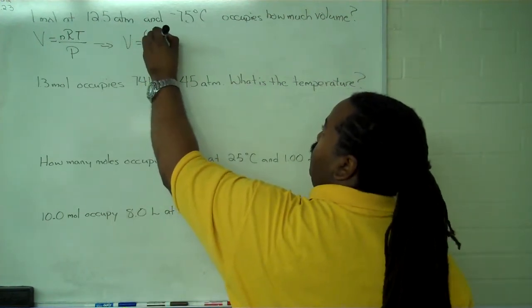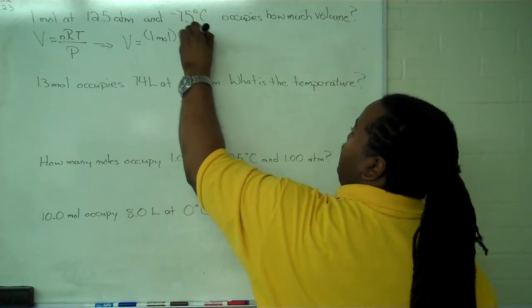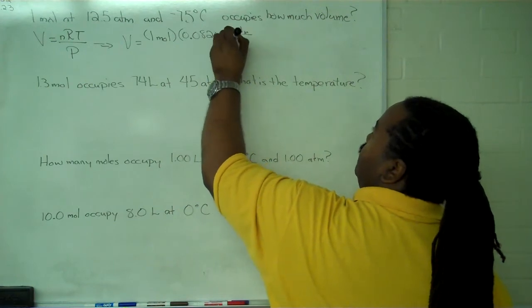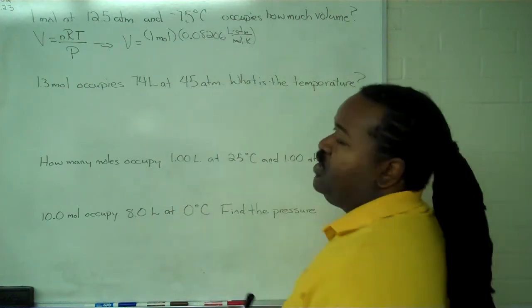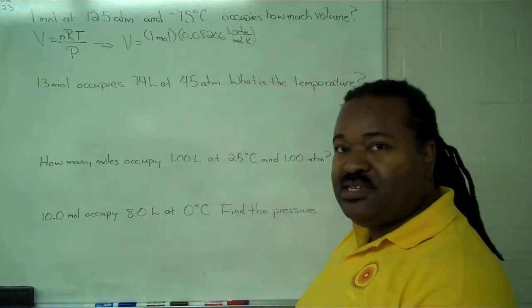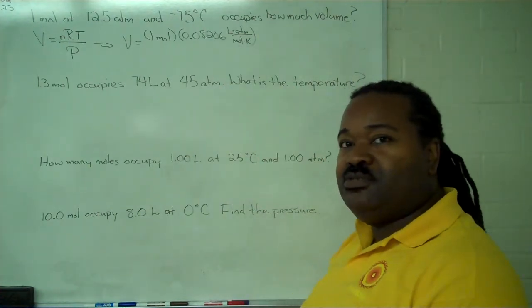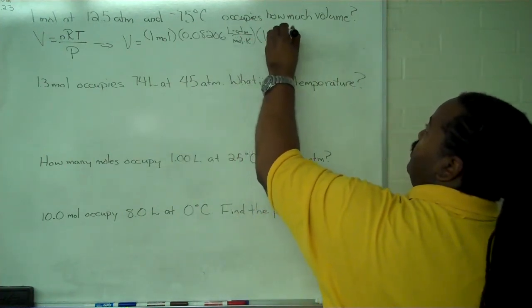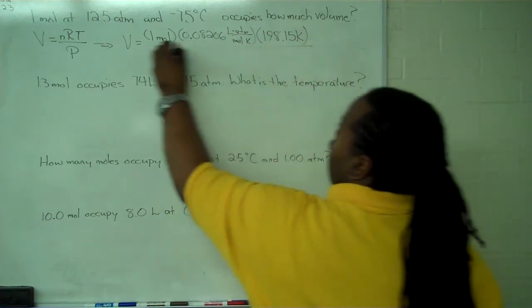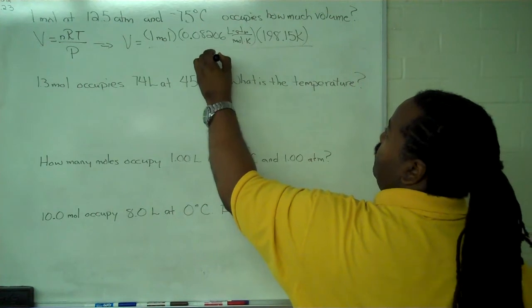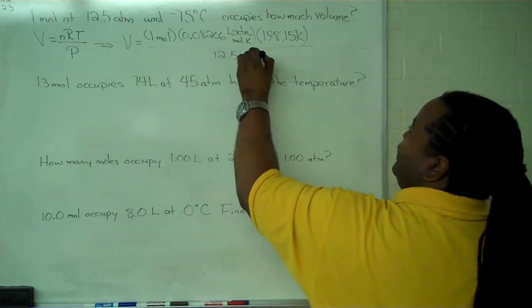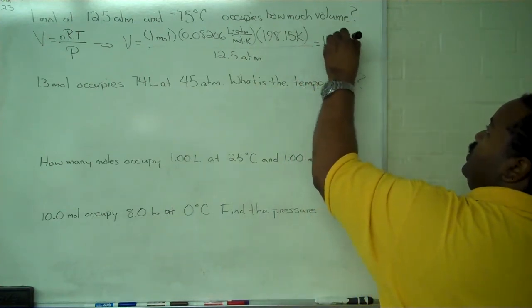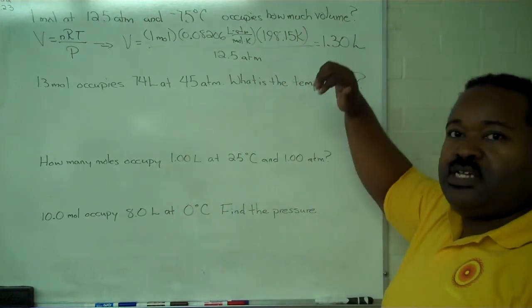We have one mole of our gas. We have our ideal gas constant, which is 0.08206 liter atmospheres per mole Kelvin. Because it's using Kelvin, we have to convert our minus 75 degrees Celsius to degrees Kelvin, and that is 198.15 Kelvin. So all the units cancel out once we place our pressure at the bottom, 12.5 atmospheres, and this gives us a volume of 1.30 liters.